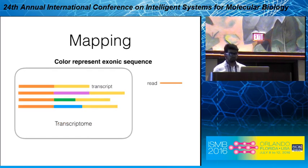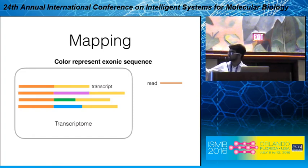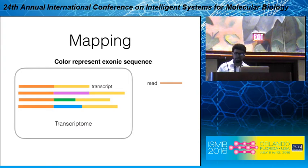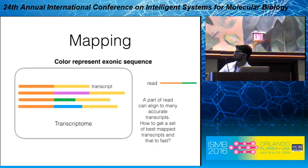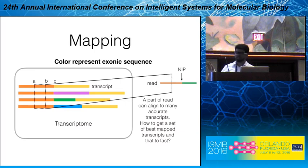Before moving further, let me give you some intuition of the concepts we use in quasi-mapping. If I give you a transcriptome shown on the left — where each row represents a transcript and each color in a transcript represents an exonic region — and I give you a read shown on the right in orange, where would this read map in the transcriptome? Obviously to all matching transcripts. But if I take a read coming from two exonic regions — shown in orange and green — where will it map? Obviously to a specific transcript. The real problem is finding how fast we can determine that.